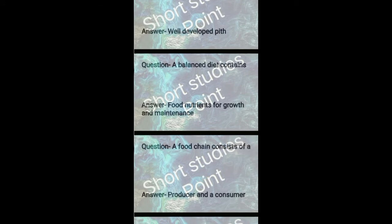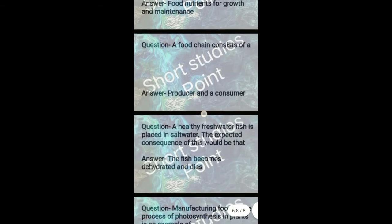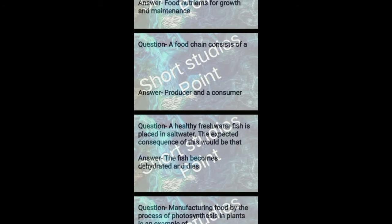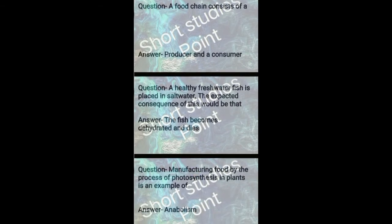Question: A balanced diet contains? Answer: Food nutrients for growth and maintenance. Question: A food chain consists of? Answer: Producer and a consumer. Question: A healthy freshwater fish is placed in saltwater. The expected consequence of this would be? Answer: The fish becomes dehydrated and dies.